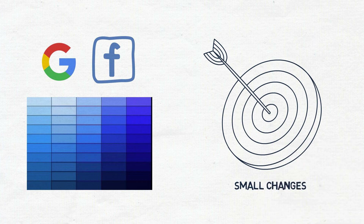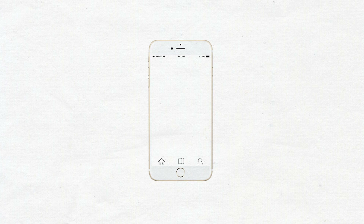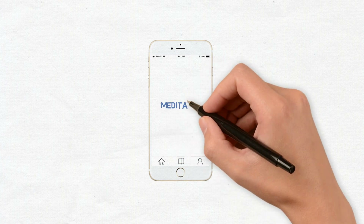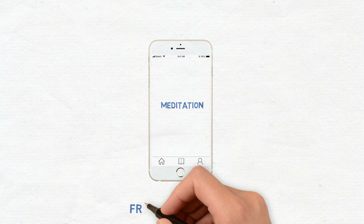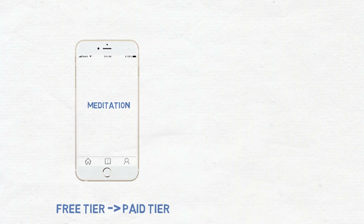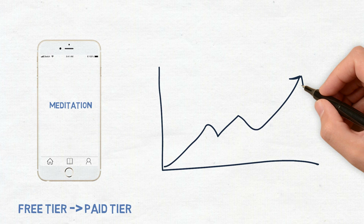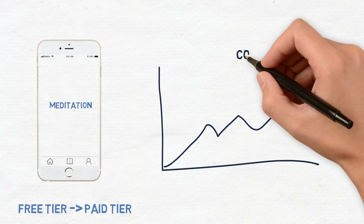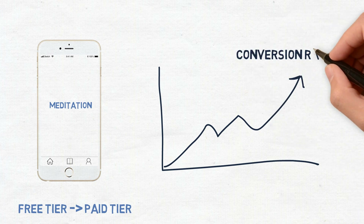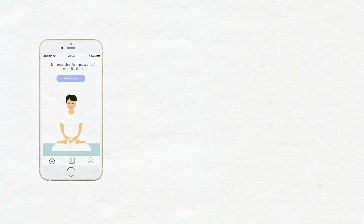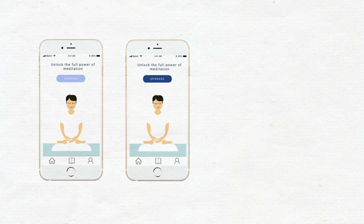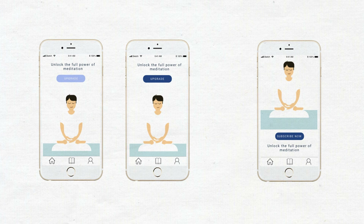A-B testing is one part of a larger iterative process to improve usability and conversion rate over time. It thrives as a testing method when you are looking to find small changes to optimize the current solution. For example, let's say you are working on a meditation app and your goal is to increase conversion from the free tier to the paid tier. In order to increase conversion rates, you can test the call to action button — you can change the color, shape, placement, and many more. It's important to identify a single goal and not make too many changes at once.